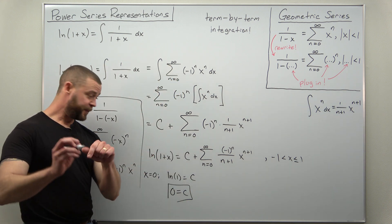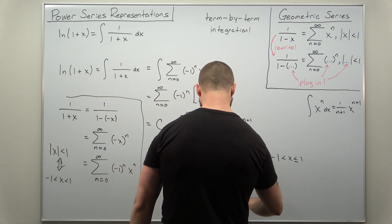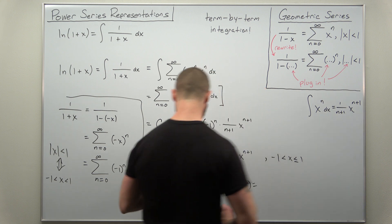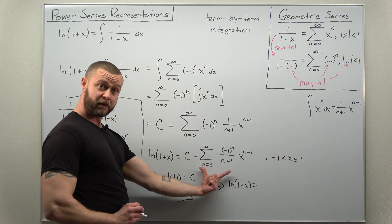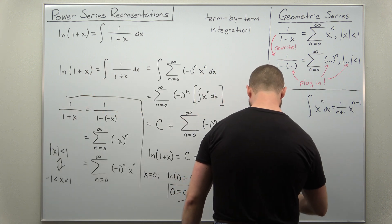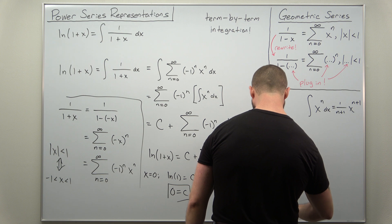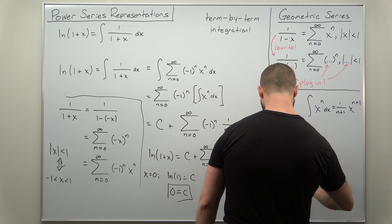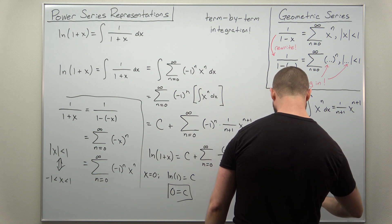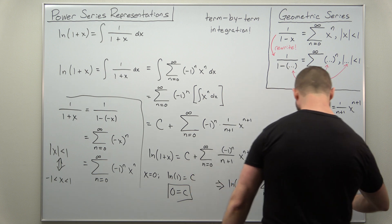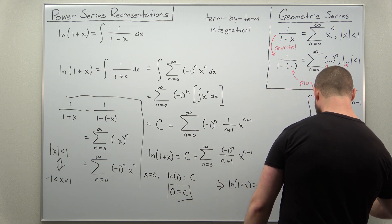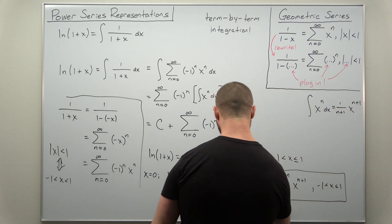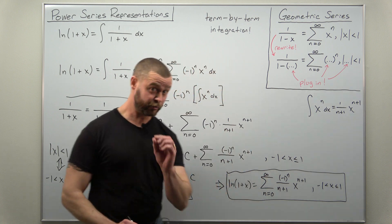And what we get is our power series representation for the function natural log of 1 plus x. Your constant of integration is 0, and we get this summation here going from n equals 0 to infinity of negative 1 to the n divided by n plus 1 times x to the n plus 1. And more importantly, we also get the interval of convergence, negative 1 to positive 1, where we include positive 1 as well.